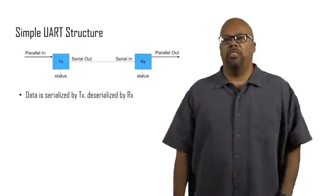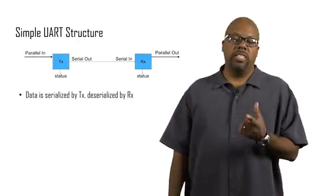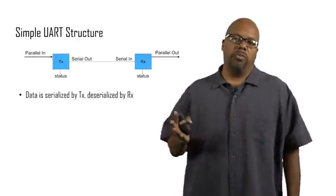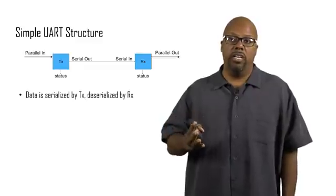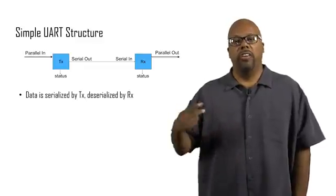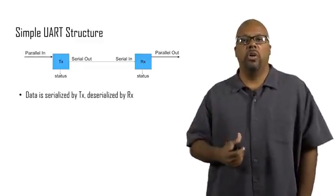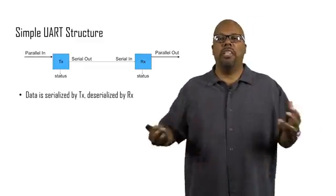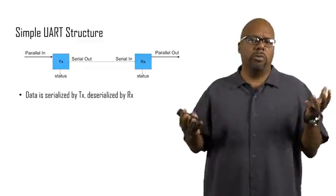And there are these status bits. So the data is serialized by TX. What that means is eight bits come in on parallel in, and then they get serialized, sent one at a time, one bit at a time on serial out. And they're deserialized on the receiving end. So they come in one bit at a time, and then they get packaged into chunks, probably of eight bits.